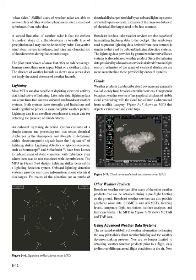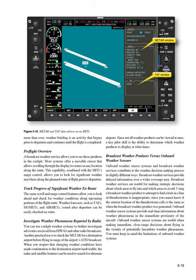Using advanced weather data systems: the increased availability of weather information is changing the way pilots think about weather briefing and the weather decision-making process. You are no longer limited to obtaining weather forecast products prior to a flight, only to discover different actual flight conditions in the air. Now more than ever, weather briefing is an activity that begins prior to departure and continues until the flight is completed. Most systems offer a movable cursor that allows scrolling through the display to center on any location along the route, combined with the MFD's range control, allowing you to look for significant weather anywhere along the planned route of flight prior to departure. The same scroll and range control features allow you to look ahead and check for weather conditions along upcoming portions of the flight route. Weather forecasts, such as TAFs, SIGMETs, and AIRMETs issued after departure can be easily checked en route.